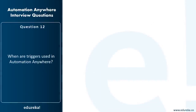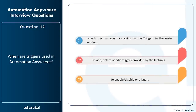When are triggers used in Automation Anywhere? Triggers are used to launch the trigger manager by clicking on triggers in the main window, to add, delete, or edit triggers provided by the features, and to enable or disable the triggers.